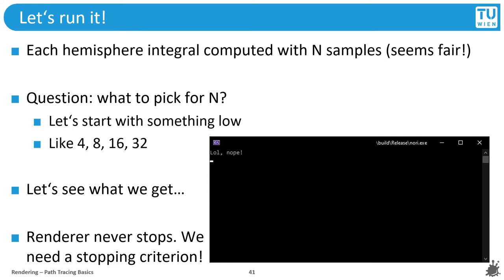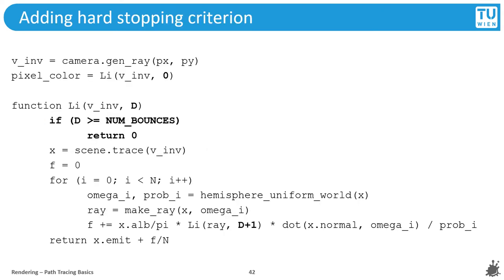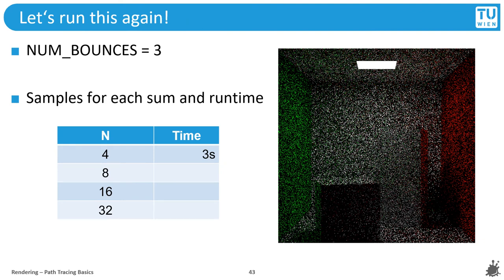We need a stopping criterion. We can get away with a low number of bounces for now, like three — that's already quite a bit of indirect bouncing. We add a recursion depth parameter to our function and stop as soon as we exceed a given maximum number of bounces. Running it again: we can already recognize our scene, and if we look very closely, we can even see color bleeding that we wouldn't have gotten with just direct lighting.